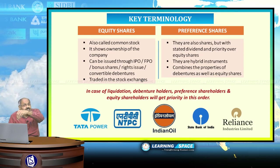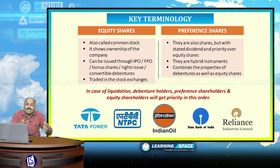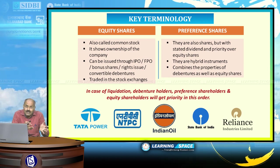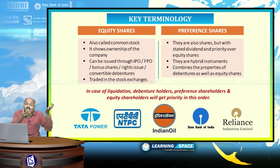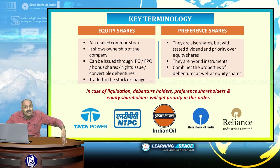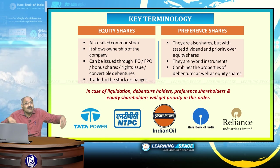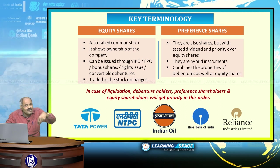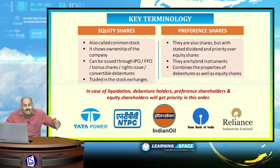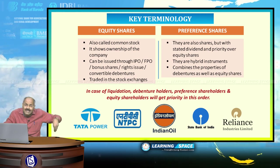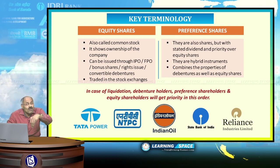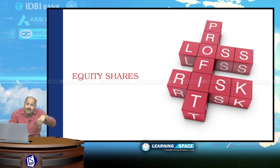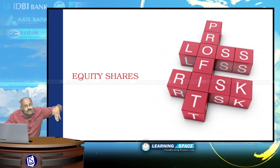There are two types of shares: equity shares and preference shares. Equity shares mean you become part owner — if the company earns profits, you get dividends or bonus shares; if the company is in losses, your share value also goes down. These are called common stock, showing ownership of the company. They can be issued through IPO, FPO, bonus shares, rights issue, or convertible debentures, and are traded on stock exchanges. Preference shares, on the other hand, give a stated dividend irrespective of whether the company is in profit or loss — they are hybrid instruments combining properties of debentures and equity shares.